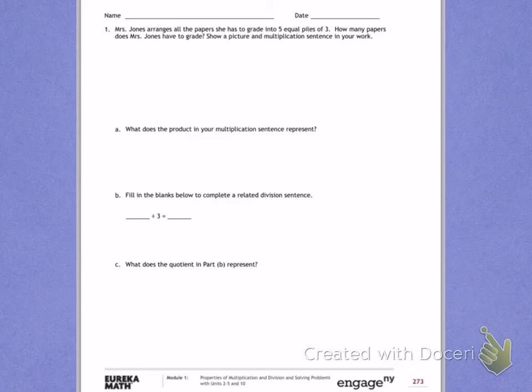Number 1. Mrs. Jones arranges all the papers she has to grade into 5 equal piles of 3. How many papers does Mrs. Jones have to grade? Show a picture and multiplication sentence in your work.